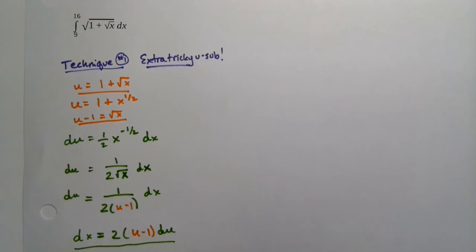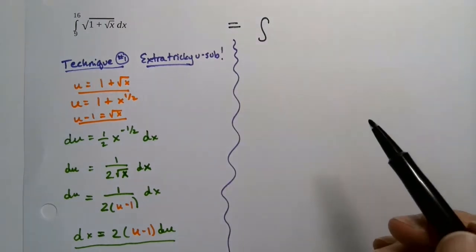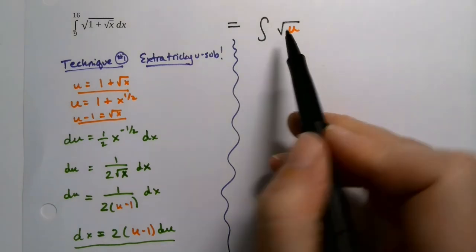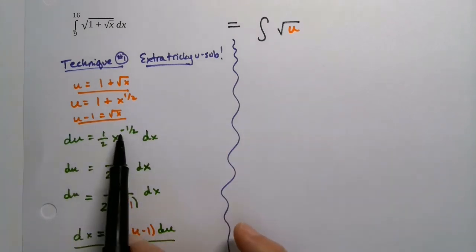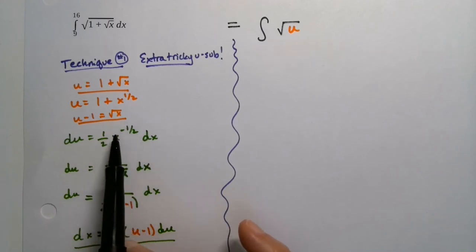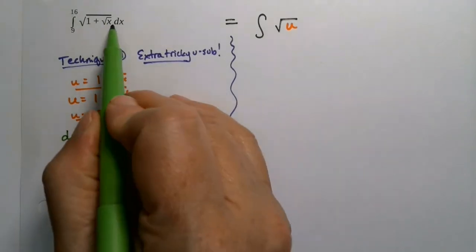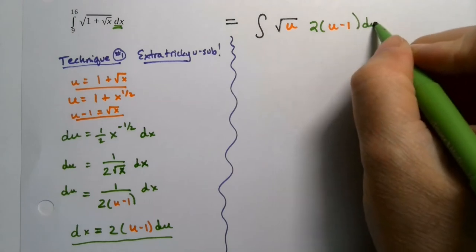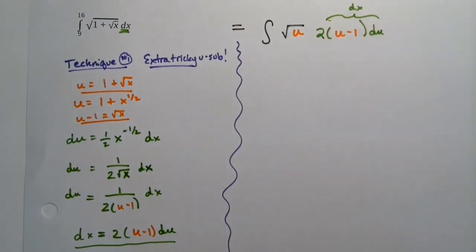Let's rewrite our integral using everything we know so far — we'll leave the numbers off for just a second. Underneath the radical is just the square root of u — super straightforward. The problem is the dx. We finagled around with the x to the negative 1/2 using u minus 1, so we could get everything in terms of u. So dx turns into 2(u minus 1) du, and the square root of x becomes the square root of u.